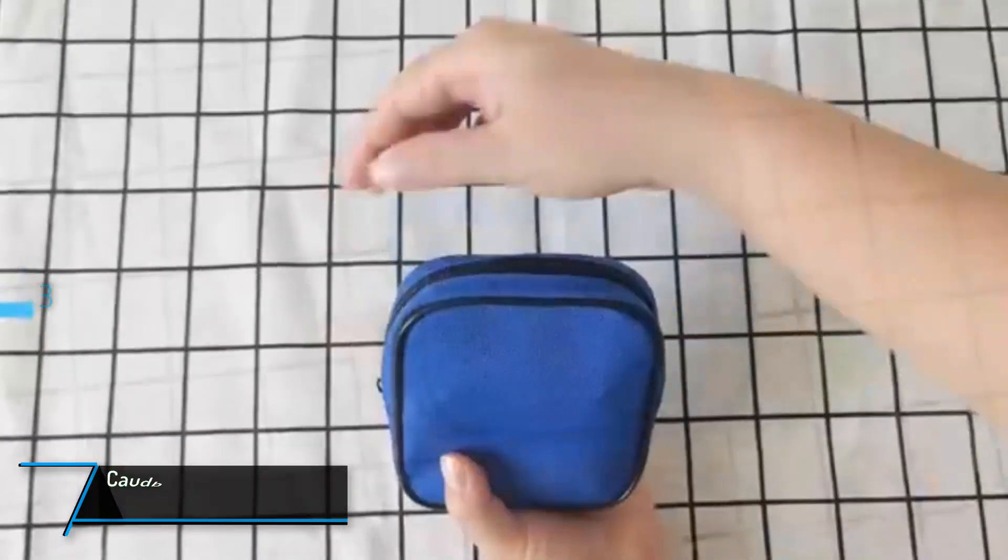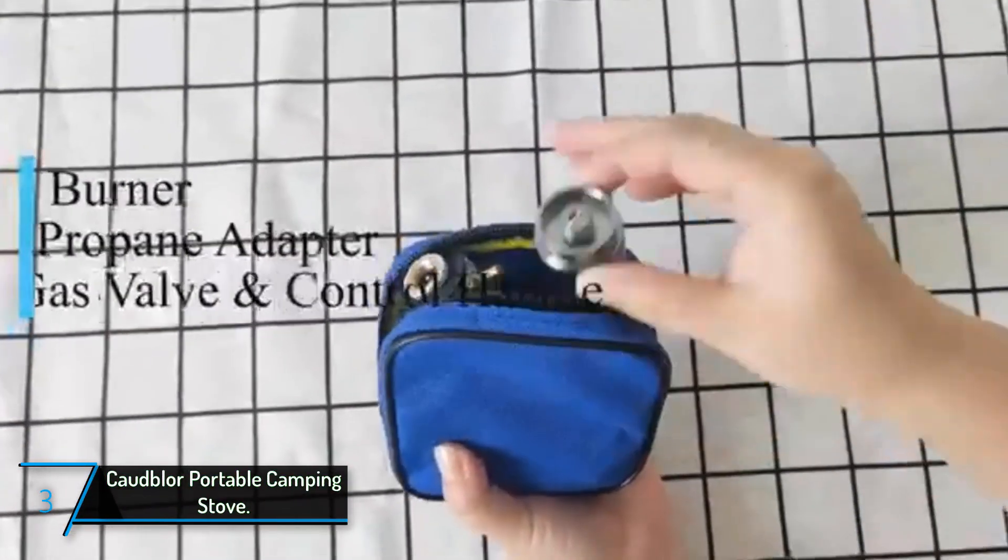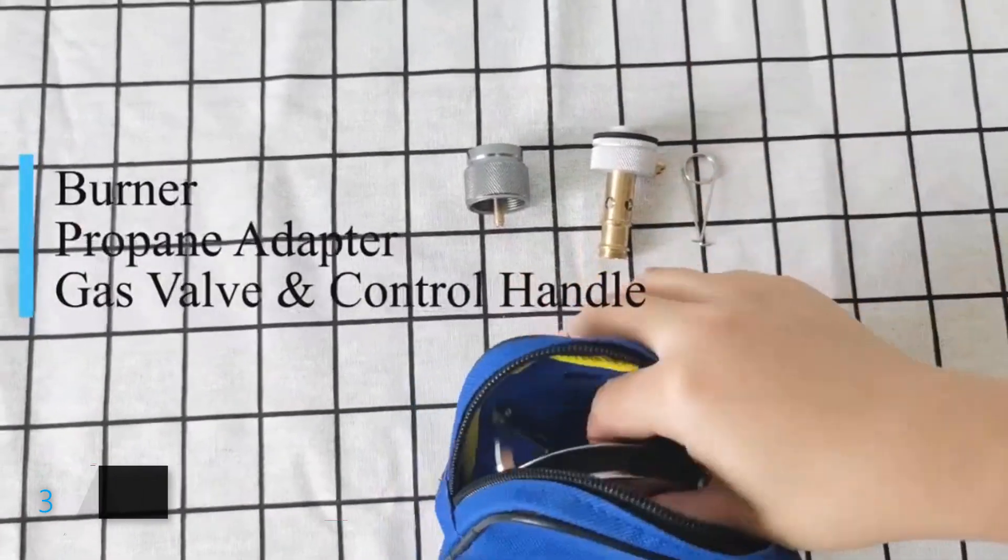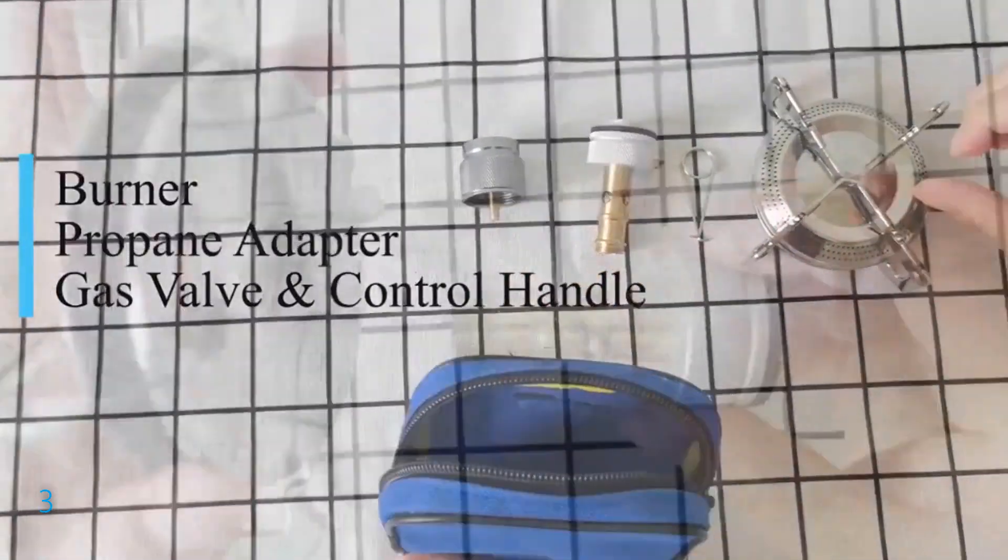The third product on our list, Codbler Portable Camping Stove. Introducing the Codbler Portable Camping Stove Burner, a compact yet powerful solution for all your outdoor cooking needs.